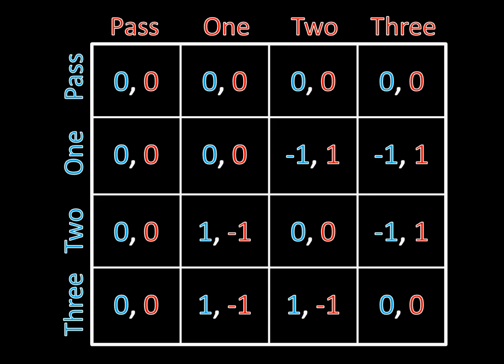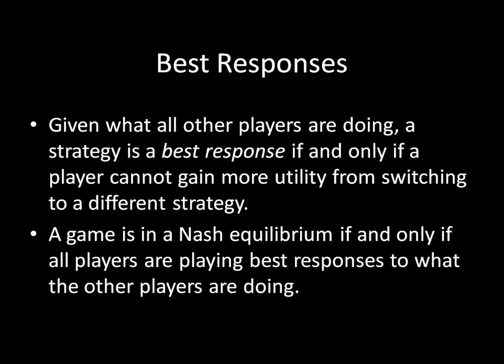It would be really nice if we could come up with a more efficient way of figuring out what strategies are pure strategy Nash Equilibria — and we can actually do that by marking best responses. A best response: given what all other players are doing, a strategy is a best response if and only if a player cannot gain more utility from switching to a different strategy. A game is in a Nash Equilibrium if and only if all players are playing best responses to what other players are doing. This is similar to what we've been saying before, where Nash Equilibrium is a set of strategies, one for each player, such that no player can change his or her strategy and do better.